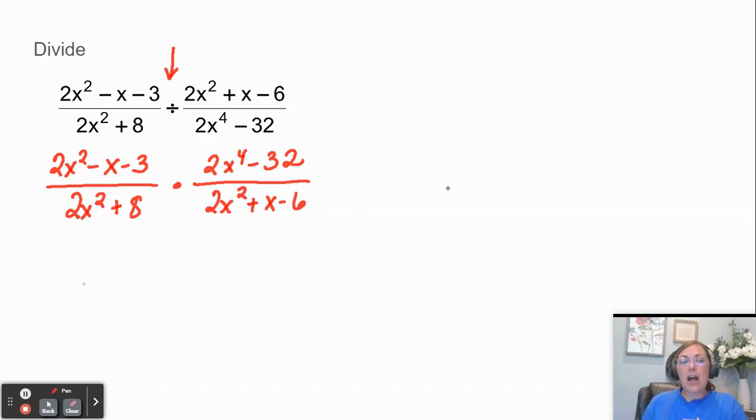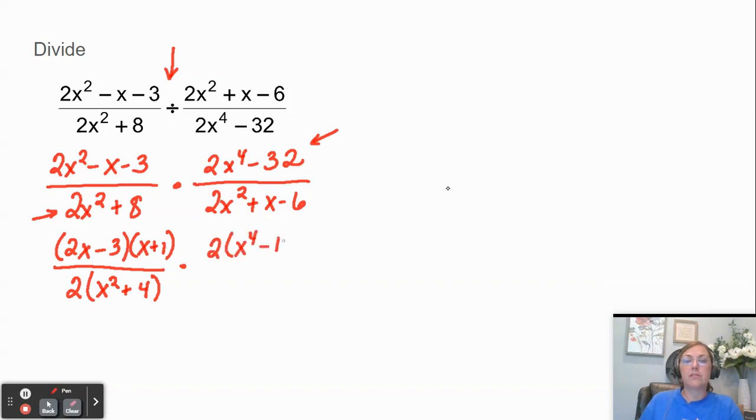So now I'm going to start in the top left and I'm going to factor 2x² - x - 3 and that factors to (2x - 3)(x + 1). Again if that's unclear to you please check out that video that I put in the cards. On the bottom left on this denominator I'm going to factor out by GCF I'm going to factor out a 2. Okay now I'm going to go top right. I'm going to factor out a 2 first. And then bottom right I'm going to factor that into (2x - 3)(x + 2).